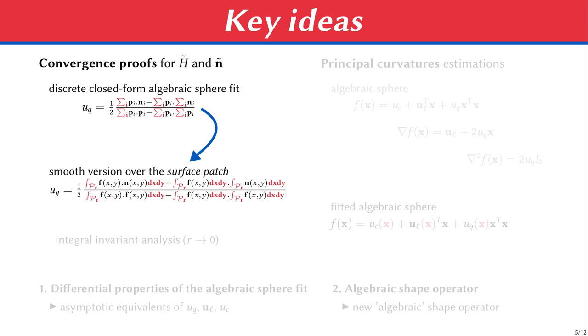And since everything is analytic, thanks to the Taylor polynomial, we can solve these integrals, make r tend to 0, in order to obtain our first contribution, which shows the differential properties hidden behind the algebraic sphere regression. So we obtain asymptotic expressions for uc, ul, and uq, which help us to prove the convergence of the APSS estimators tilde h and tilde n. This is the first theoretical contribution.